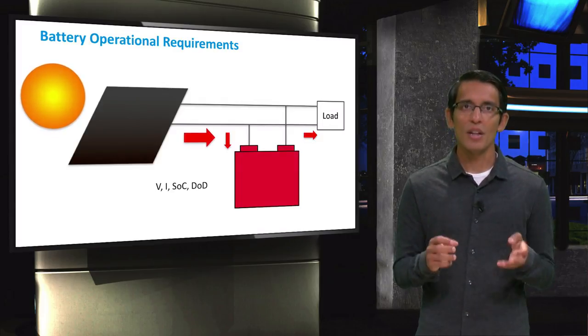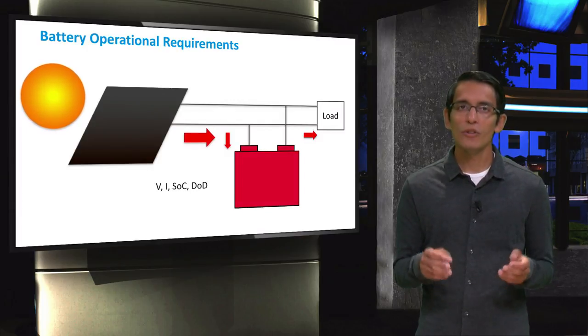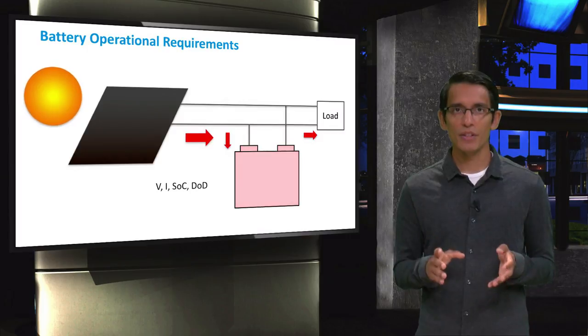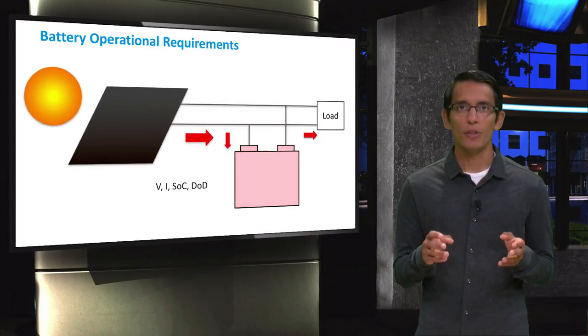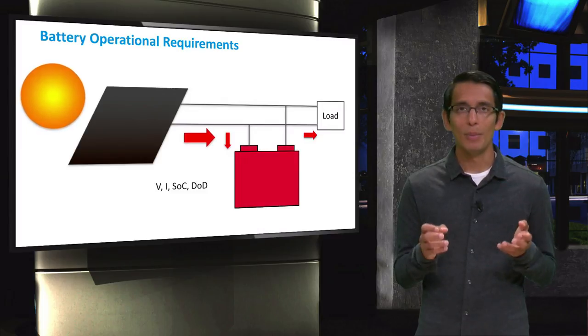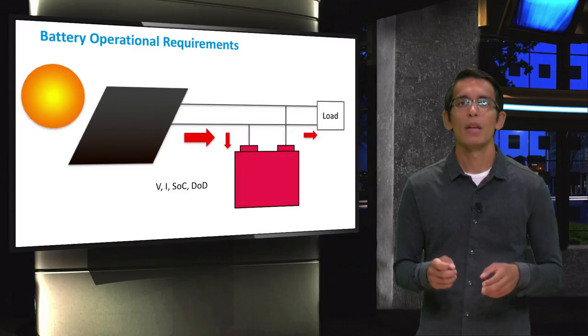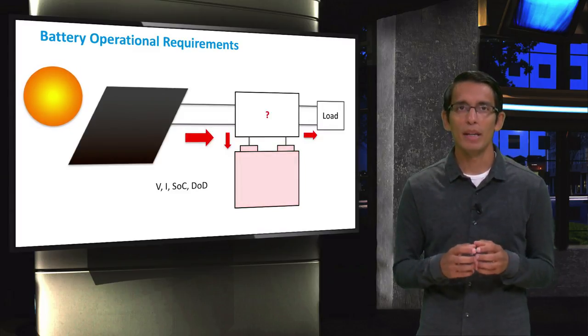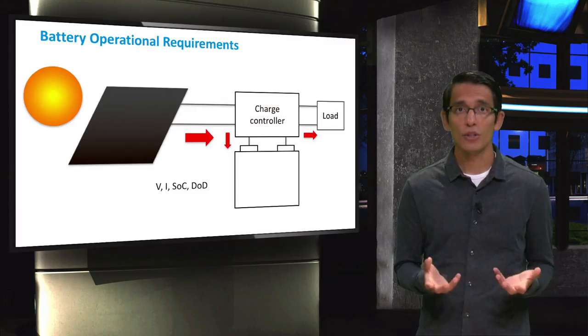When the sun intensity is constantly changing throughout the day, the current produced from the PV module also varies. Because of this current fluctuation, the charging rate of the battery fluctuates and may, under some illumination conditions, exceed the rated current to the battery which would be harmful to the battery. To prevent this situation from happening, the device that is inserted in the PV system is the charge controller.